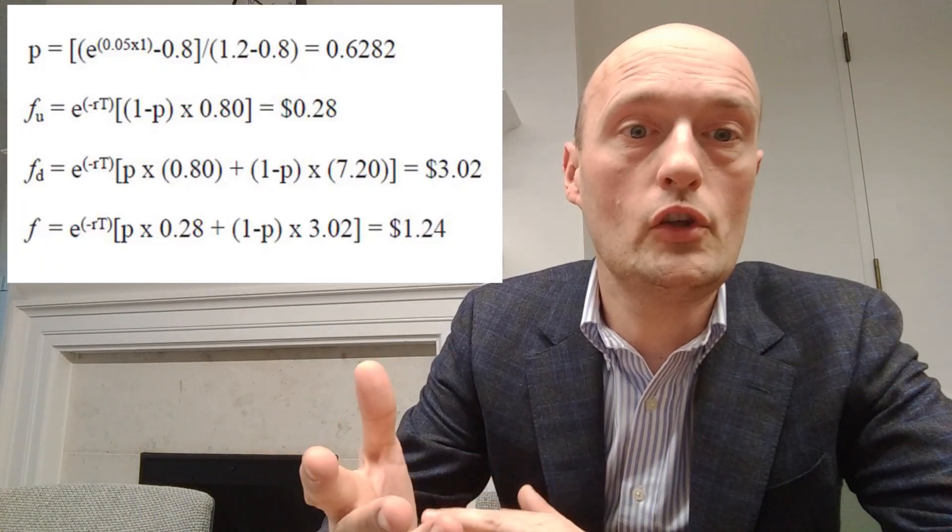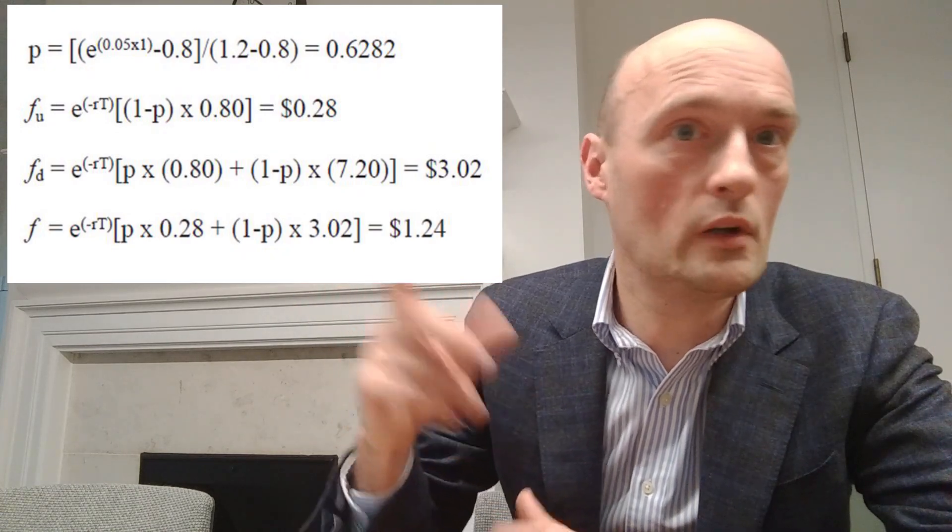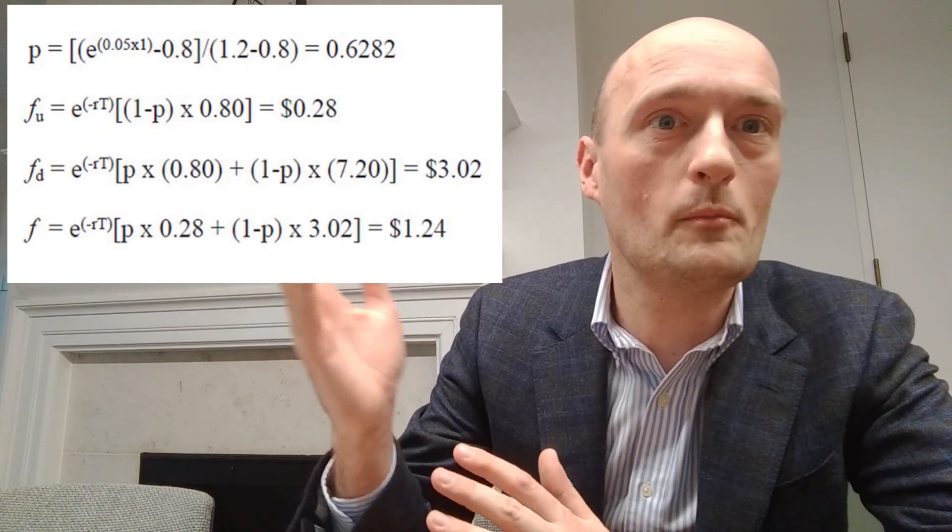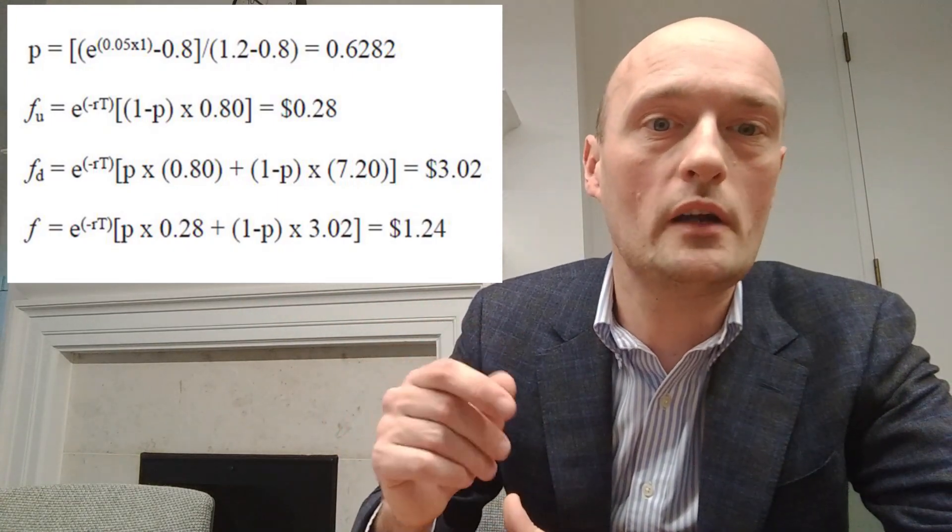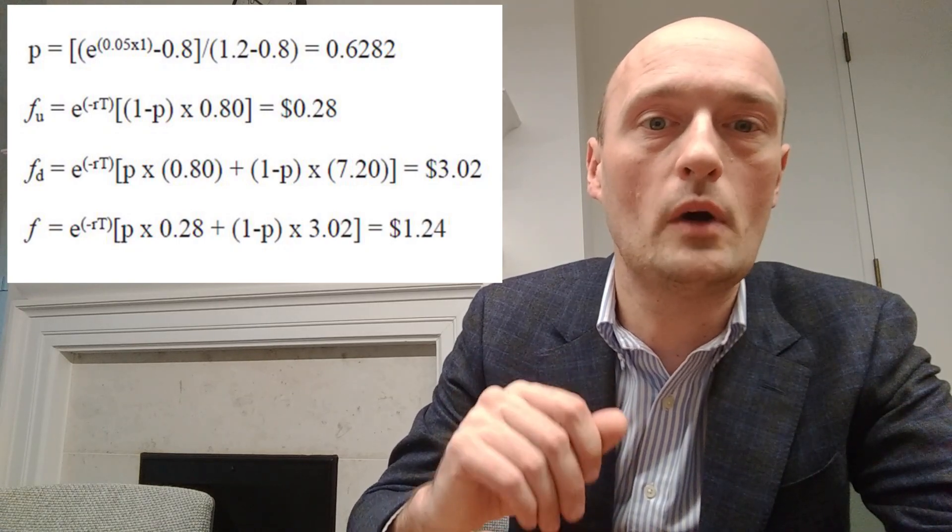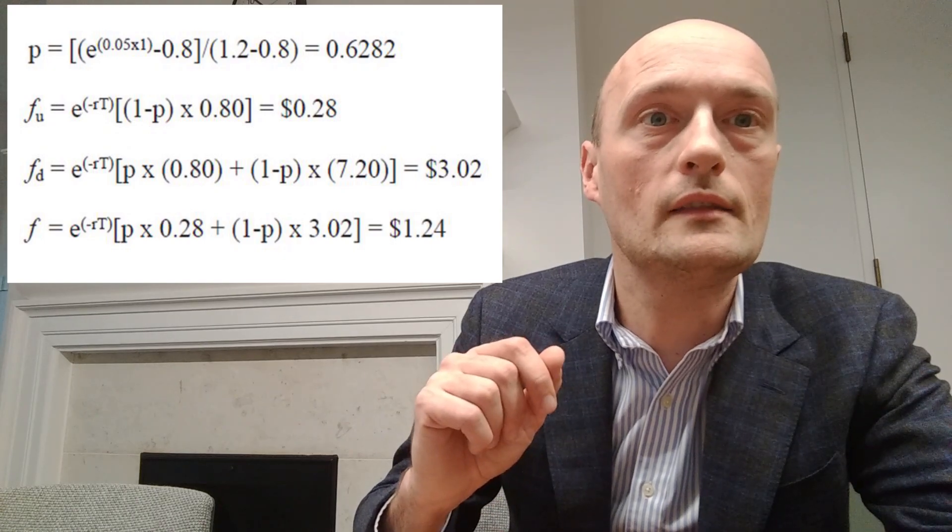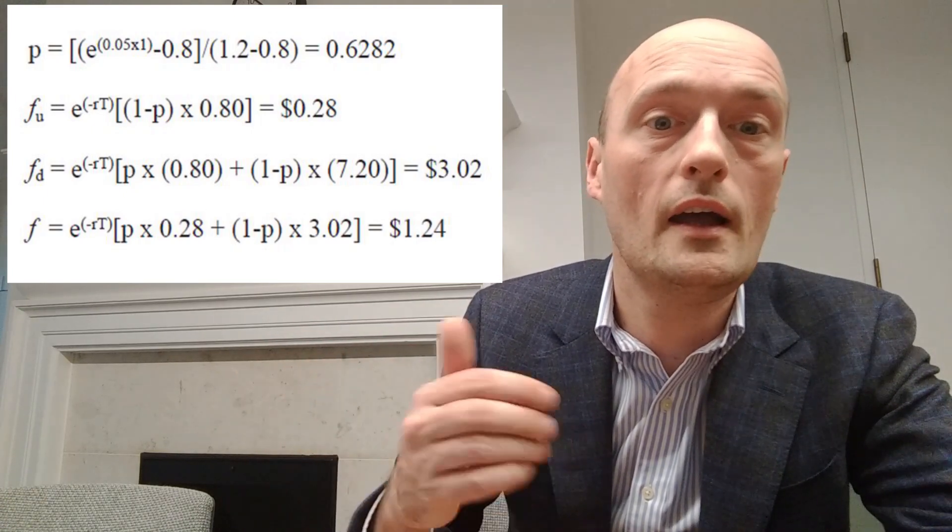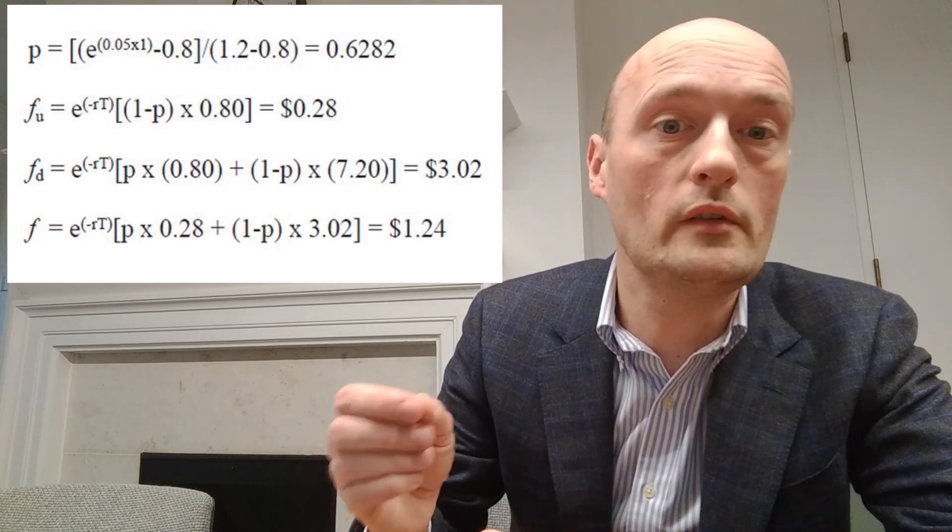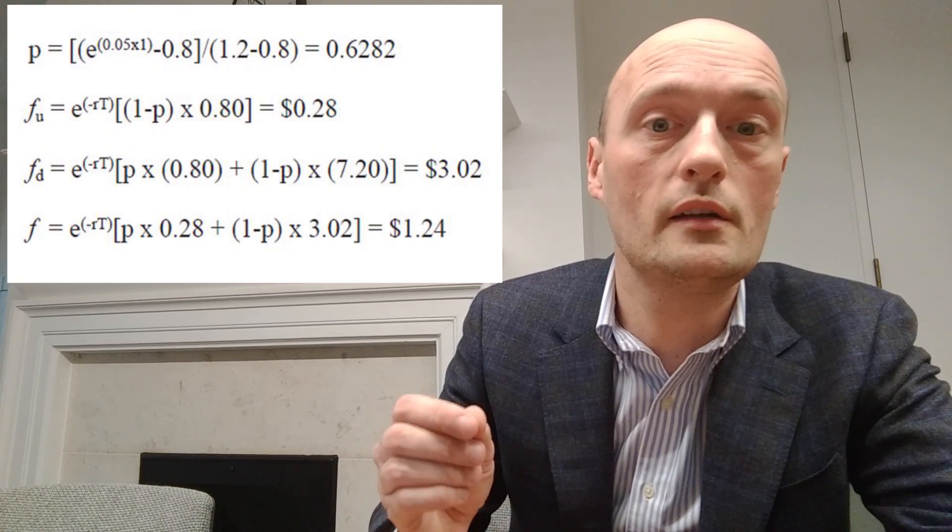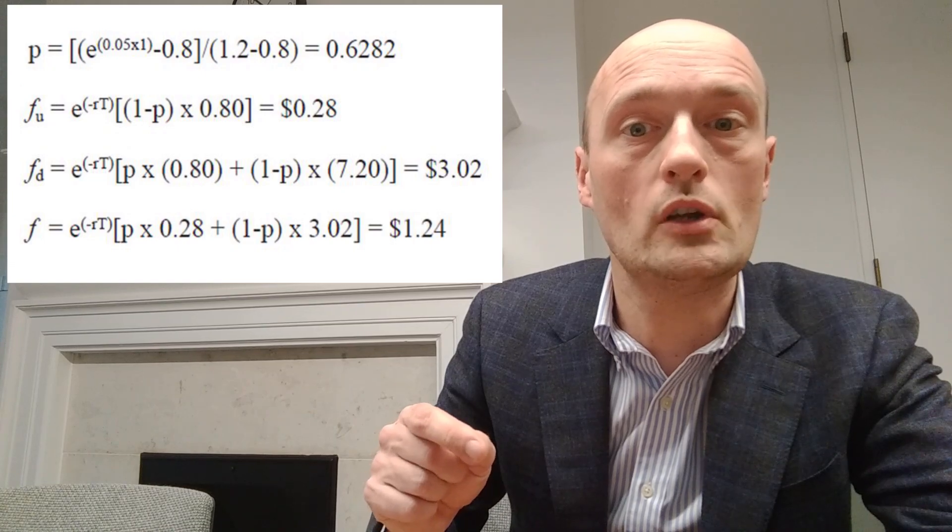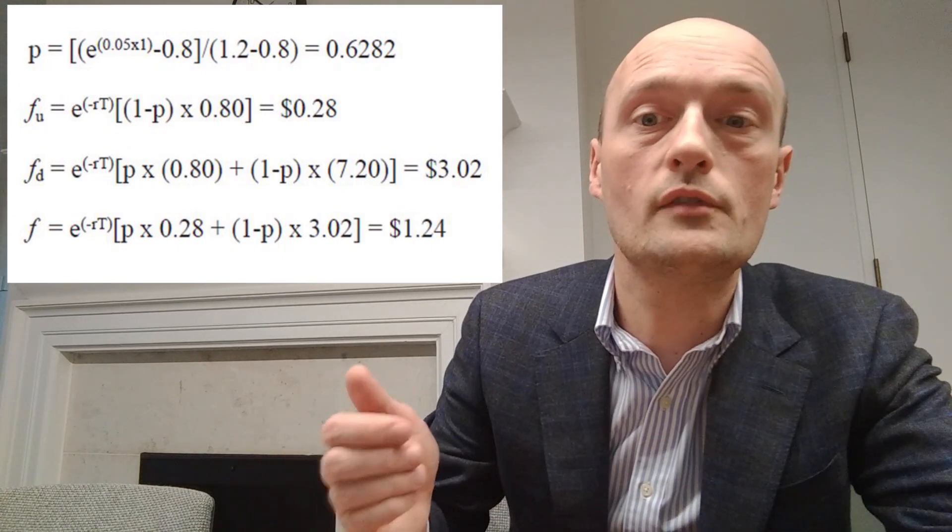Okay, so then we just do our calculation. We say Fu, so the value of the derivative at the up node, rather than the up up node, the middle up node, is P times 0, which is the payout of the derivative at the up up node. Anything multiplied by 0 is worth 0, so we'll leave that out and we'll just say 1 minus P, so 1 minus 0.6282 times $0.80, which is the value of the derivative in the middle node, present valued at 5% for one year, gives us $0.28.